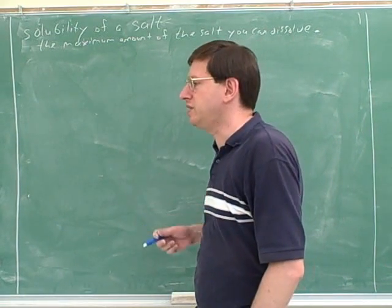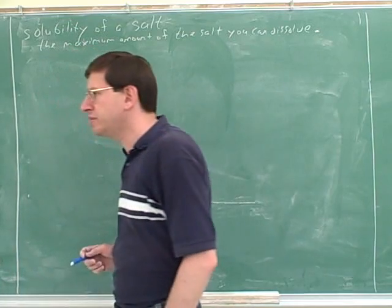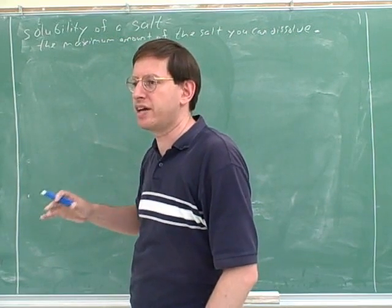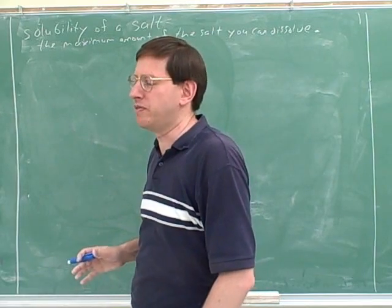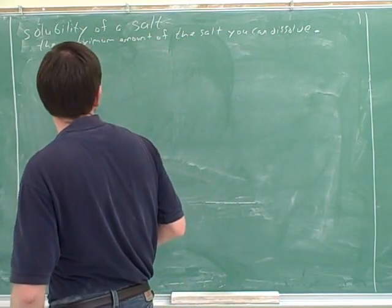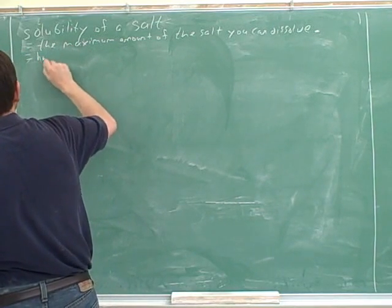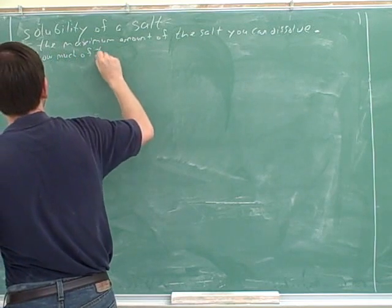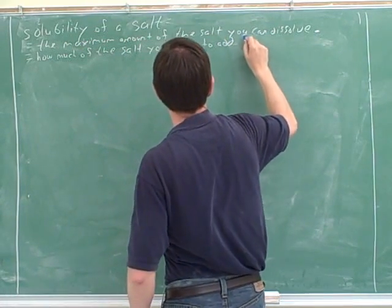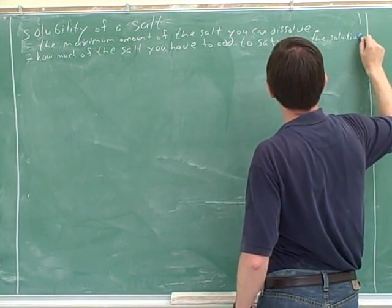If something has a high solubility, you can dissolve a lot of it. If it has a low solubility, you can't dissolve very much of it. Another way to put this: the solubility of the salt is how much you would have to add to saturate the solution. If you add an amount exactly equal to the solubility, you've saturated the solution — you can't add any more because that's the maximum.